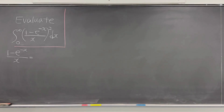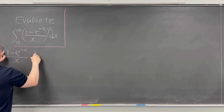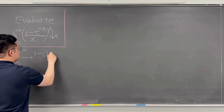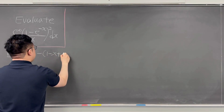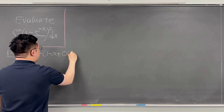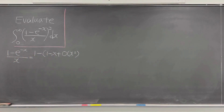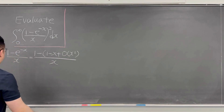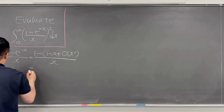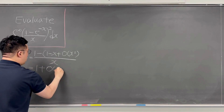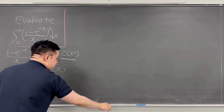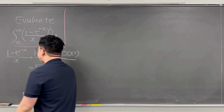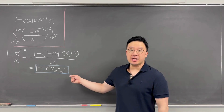Rewriting using Big O, it is the same as 1 minus (1 minus x) plus Big O of x squared, all over x. If you simplify this still using Big O, it is the same as 1 plus Big O of x. So it has to be continuous at zero.